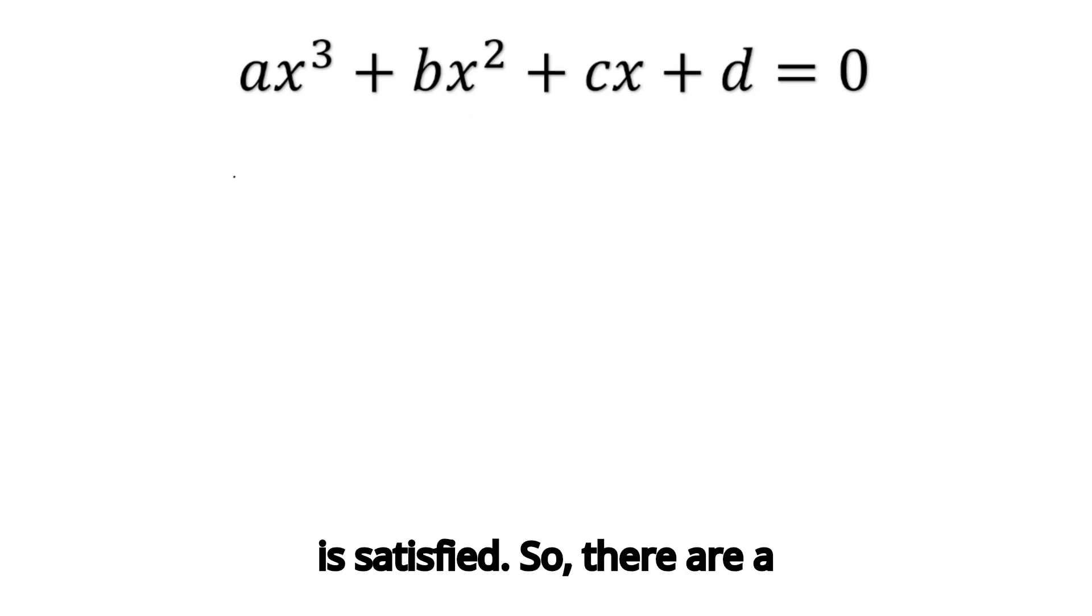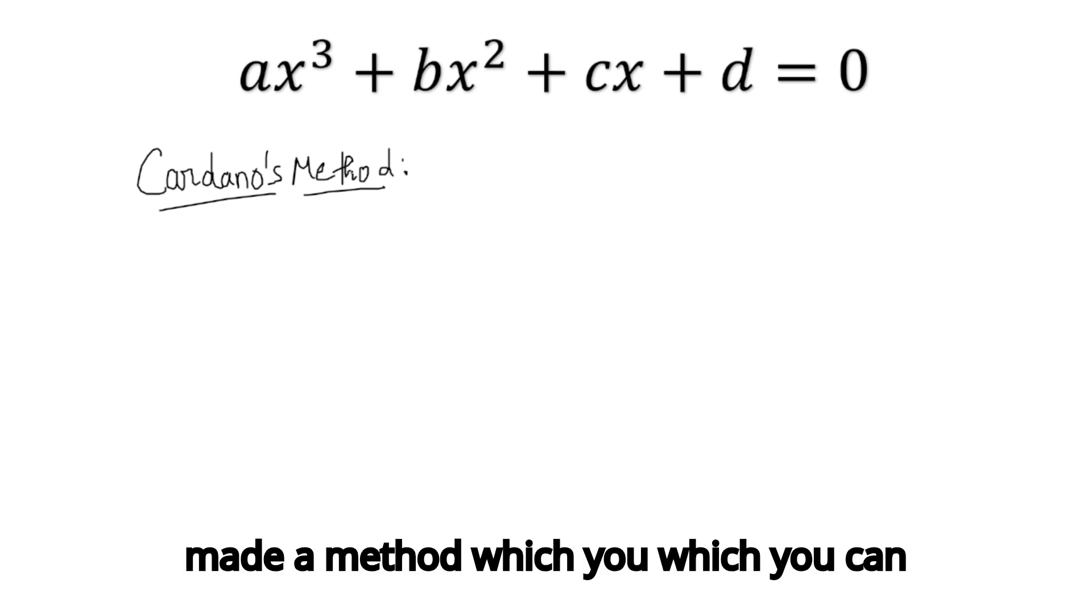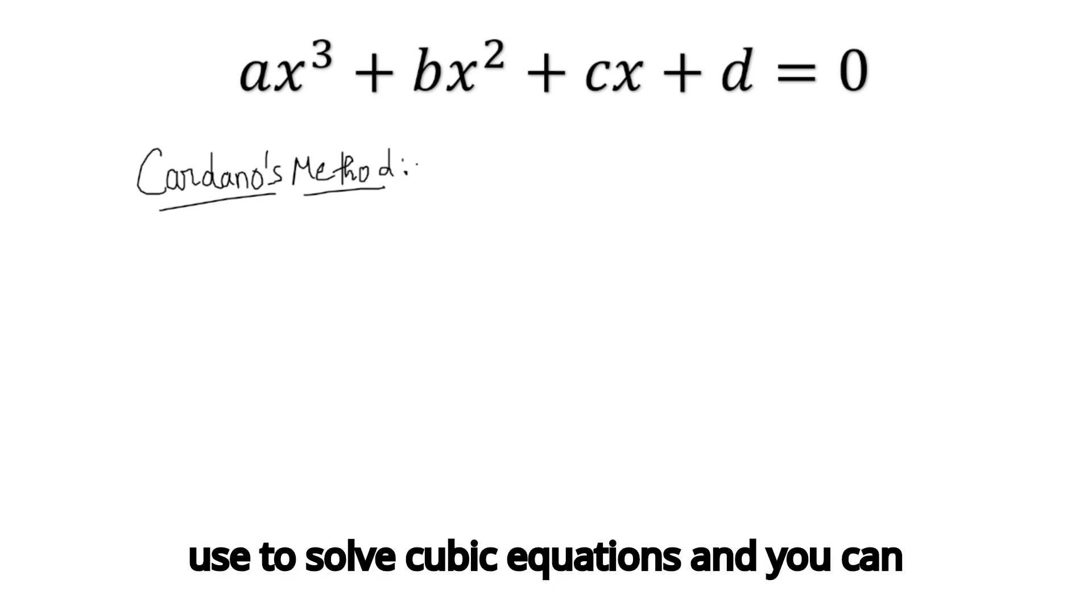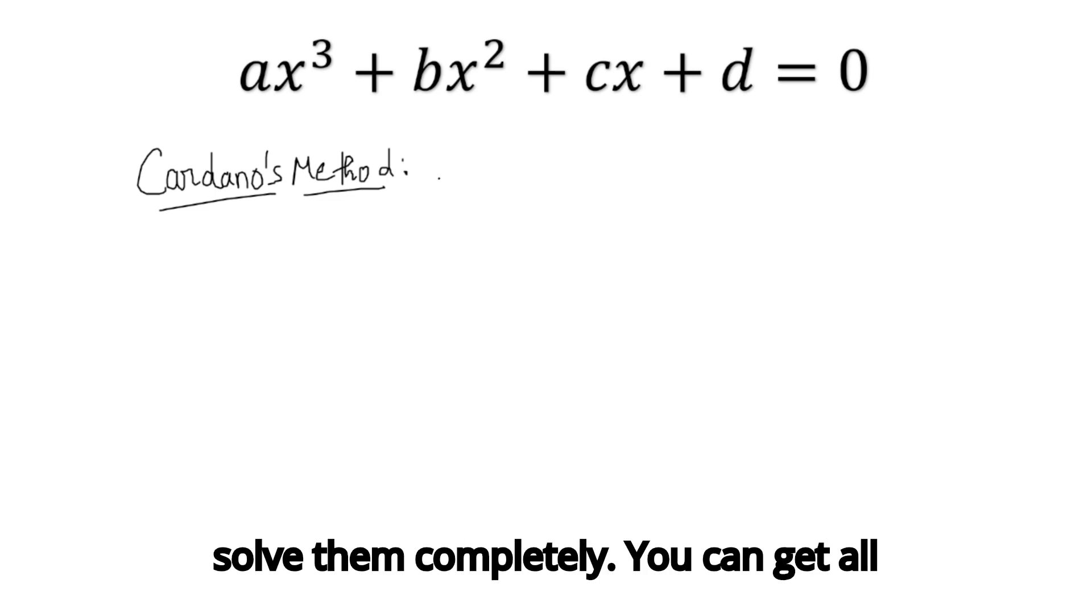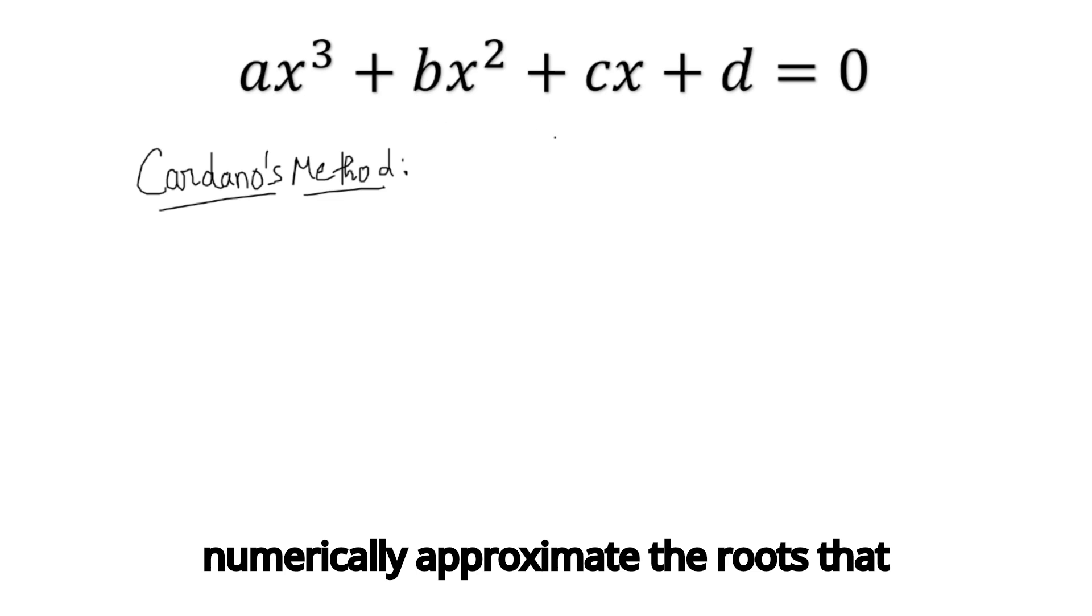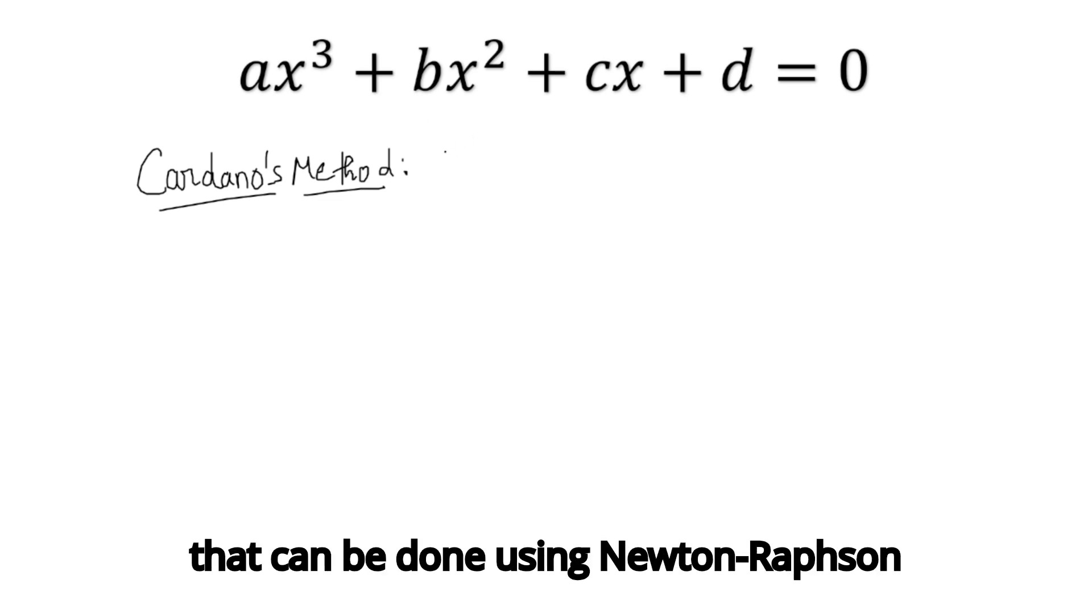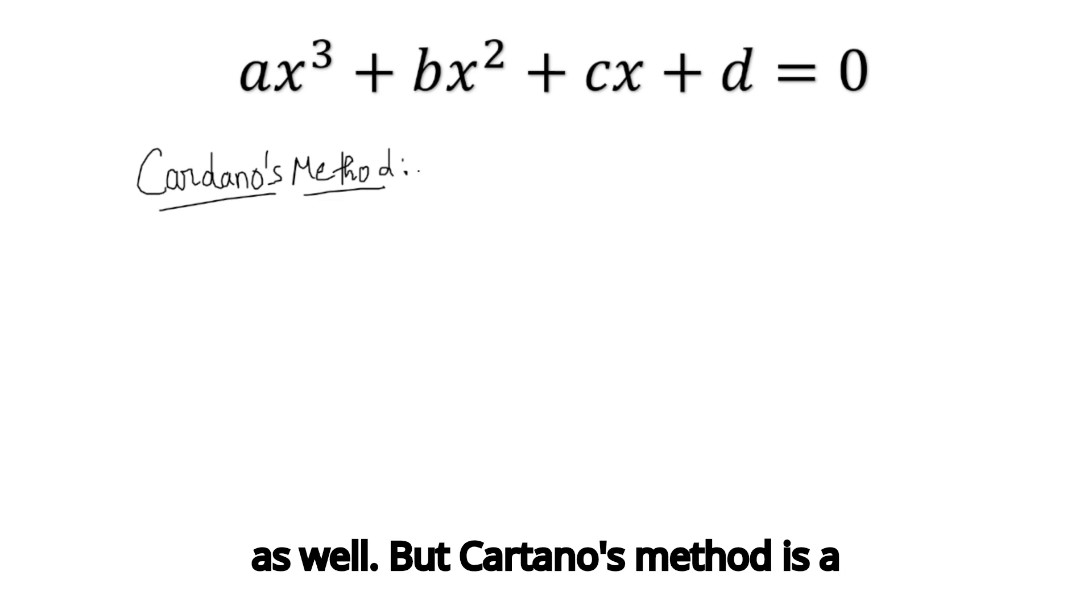There are a few steps we need to follow. This is called Cardano's method. Cardano back in the 1570s made a method which you can use to solve cubic equations completely. You can get all three values of the cubic equation in closed form using radicals and numbers. Usually people numerically approximate the roots using Newton-Raphson method, but Cardano's method is a straightforward method to directly generate the roots.